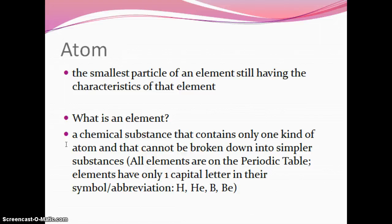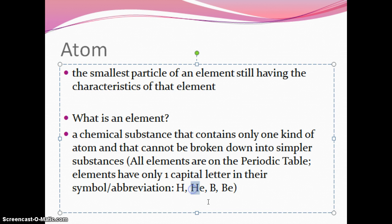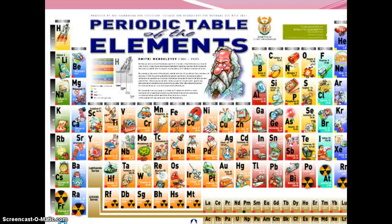All elements are in the periodic table. Elements have only one capital letter in their abbreviation or symbol — that's really important in the next couple units. You always capitalize the first letter; if there's a second letter, it is always lowercase. Our periodic table shows some radioactive elements, titanium used in hip replacements, silicon in computers. This is not on any tests or quizzes, but I threw it out there.